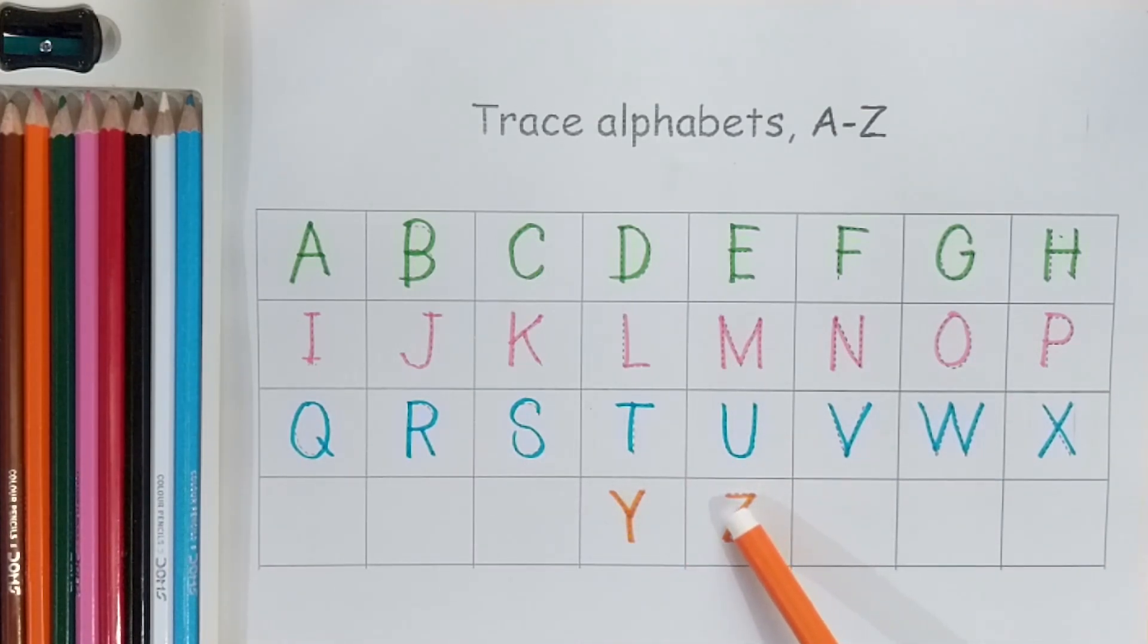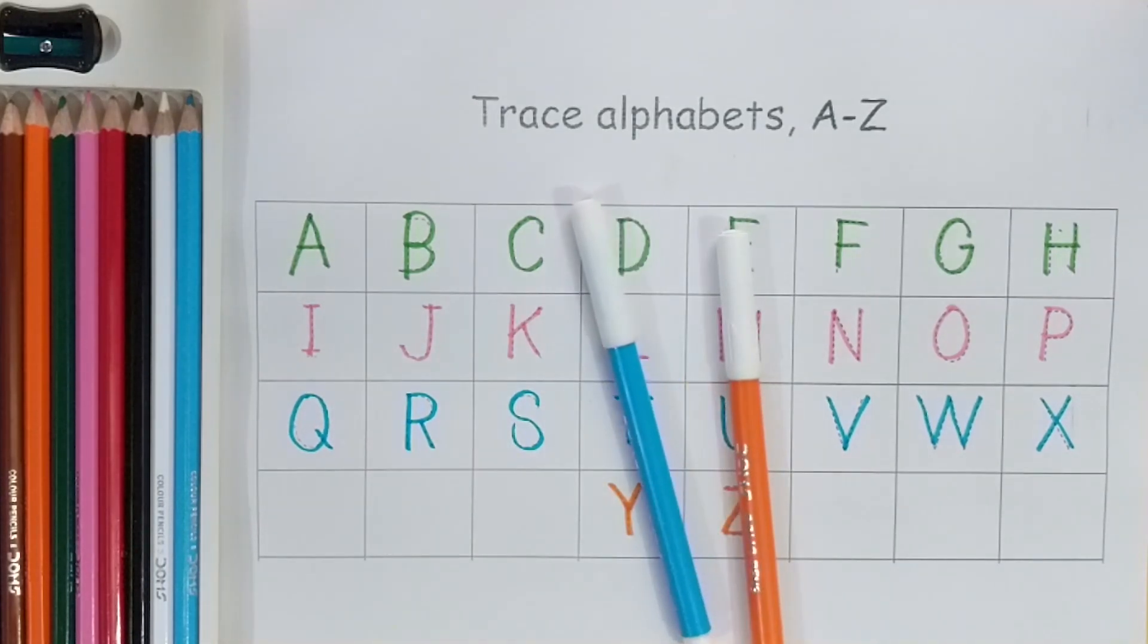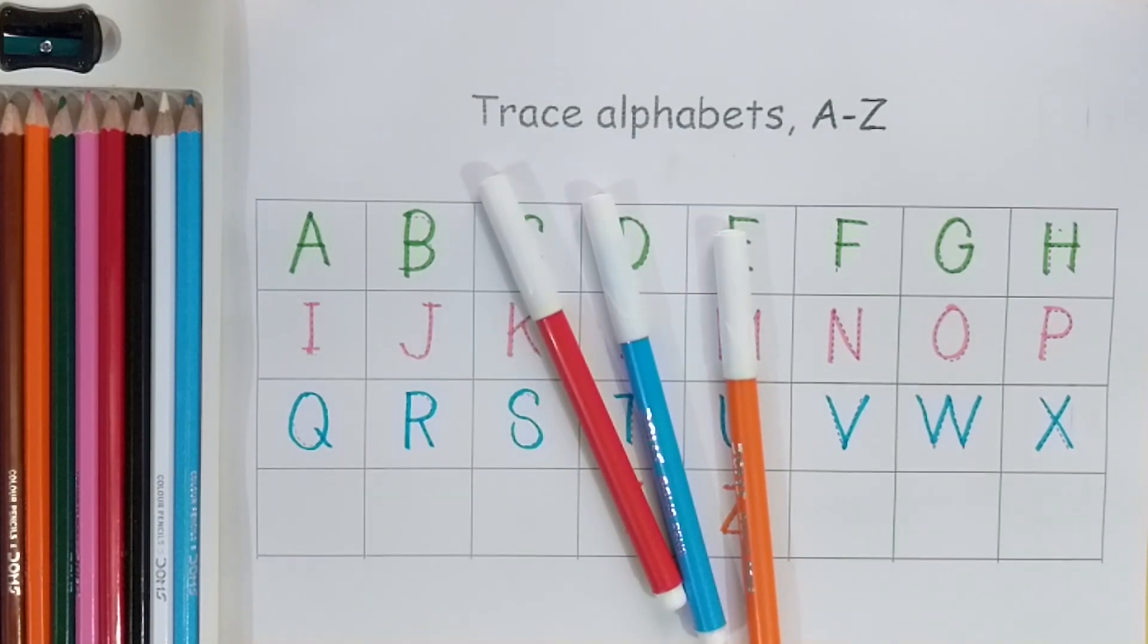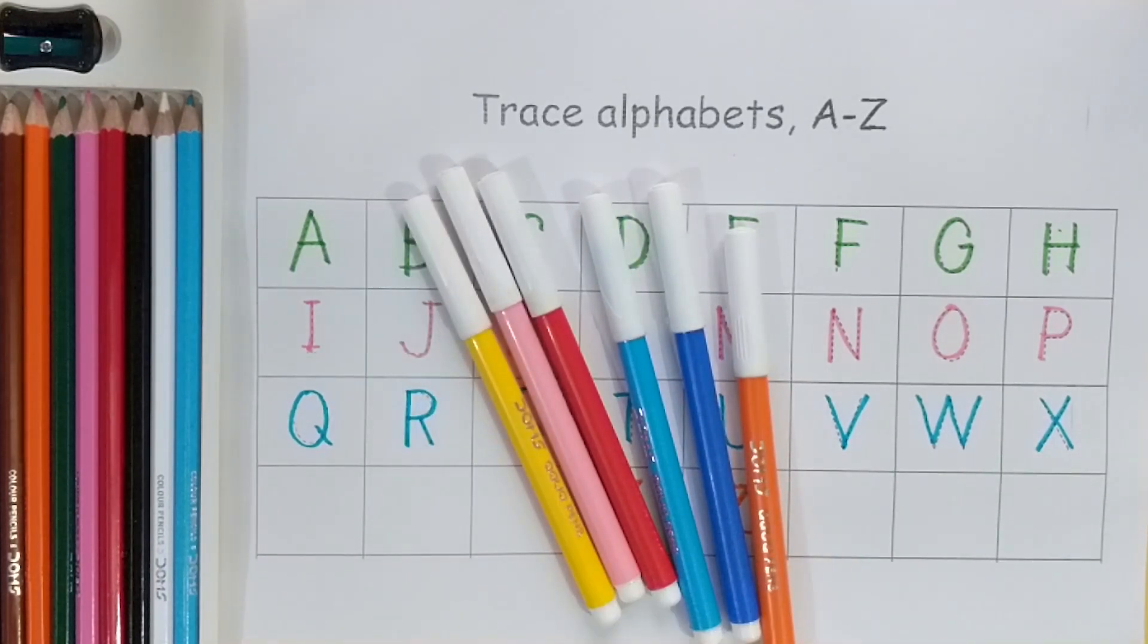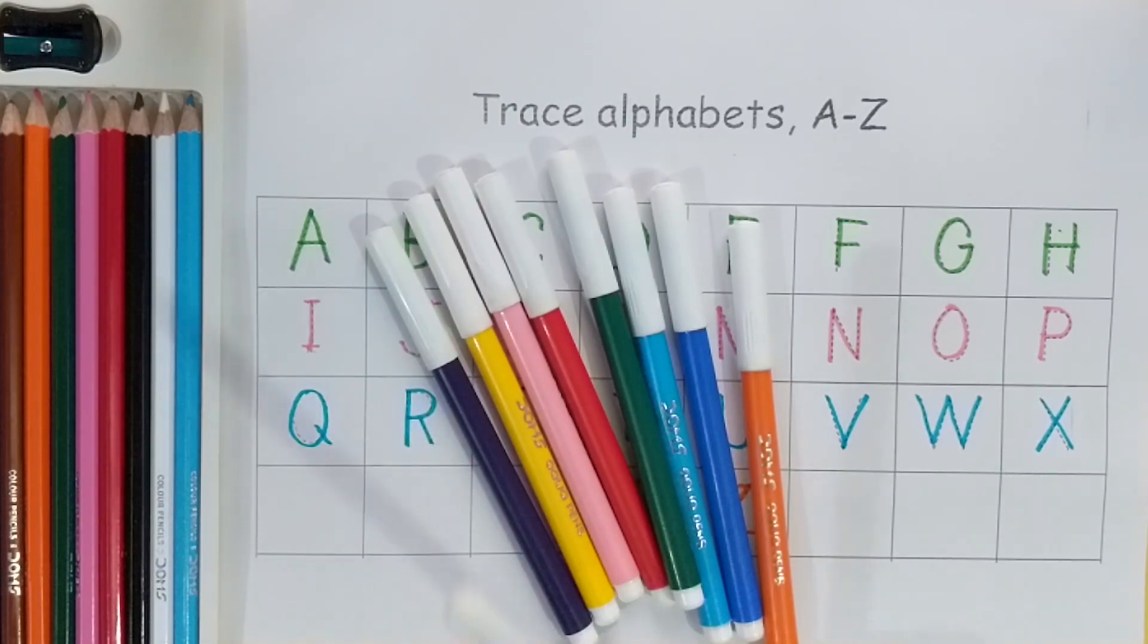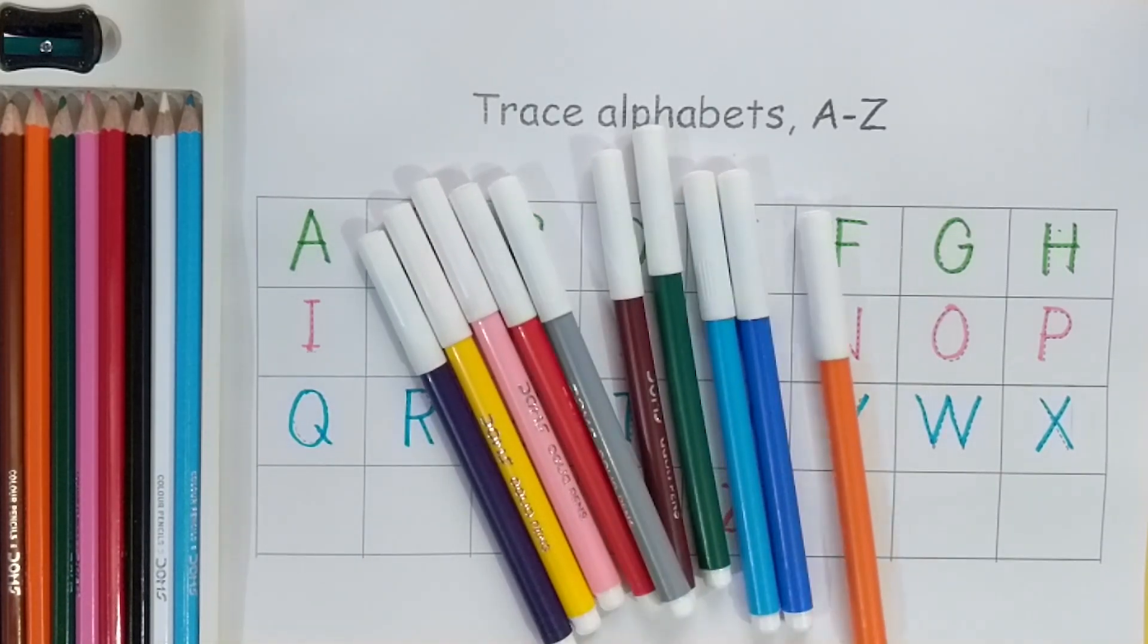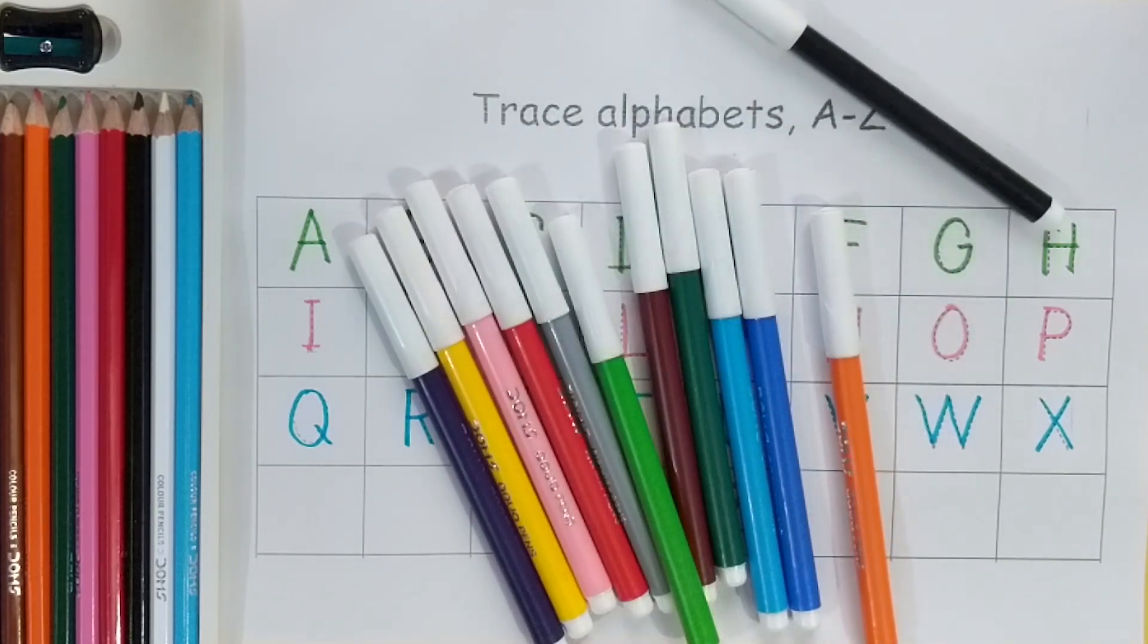Z is for xylophone. Orange color. Sky blue color. Red color. Pink color. Blue color. Yellow color. Deep green color. Purple color. Dairy color. Gray color. Light green color. Black color. Thank you.